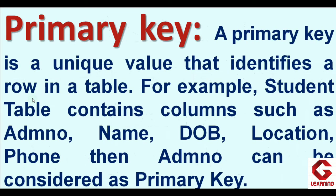A primary key is a unique value that identifies a row in a table. In RDBMS we store data in table format. In the table we first mention columns, which in RDBMS are called fields or attributes. Then we store our data in rows, which are called records or tuples.